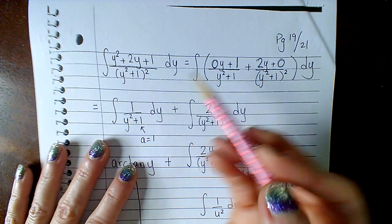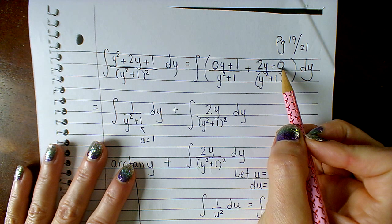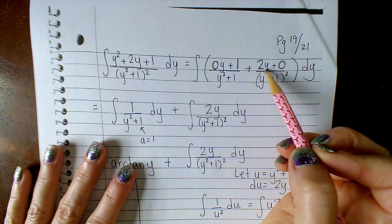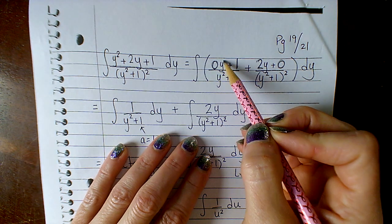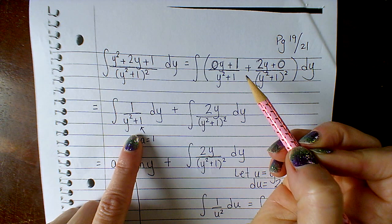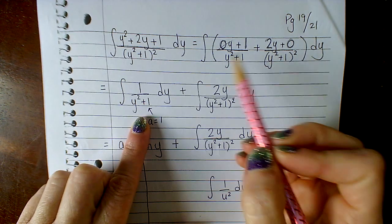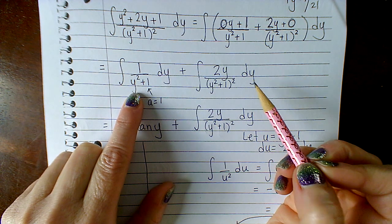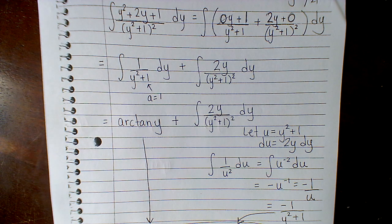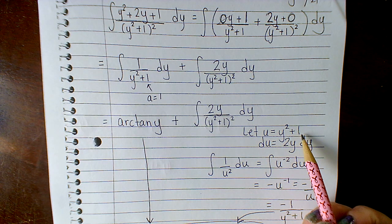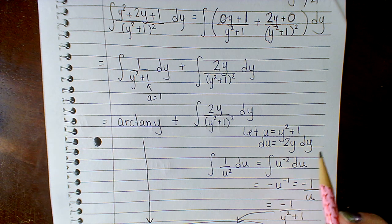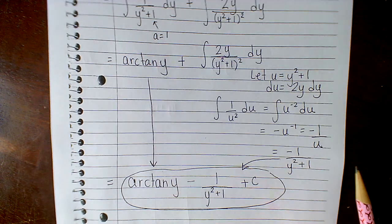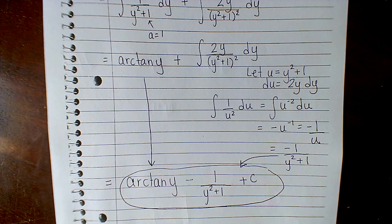So now I have a, b, c, and d. Plugging back into my partial fraction decomposition with ay plus b and cy plus d: since a equals 0, that first integral becomes 1 over y squared plus 1, which is an arctangent. The second integral becomes 2y over y squared plus 1 squared. For that one I let u equal y squared plus 1, so du equals 2y dy — it's already up there. I just need to integrate 1 over u squared, which is u to the negative 2, a simple power rule. And there's my final integral.